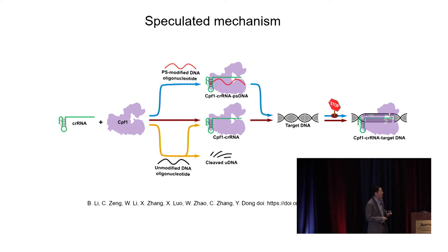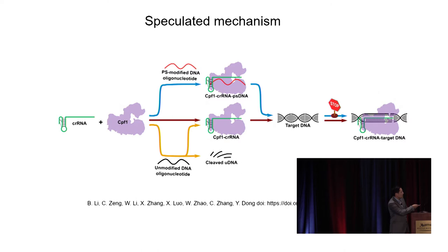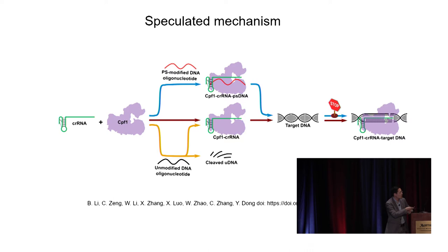Here is the proposed mechanism. Normally, the guide RNA interacts with CPF1 to form a two-component complex, which then identifies target DNA and induces gene cutting. With PS-modified DNA, it does not block the guide RNA from binding CPF1, but forms a three-component complex that prevents recognition of the target DNA, stopping the process and thereby inhibiting CPF1 activity.